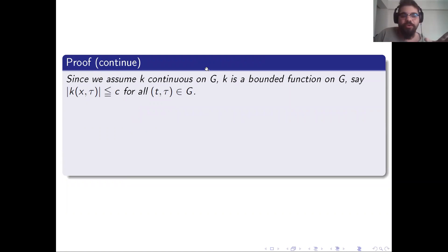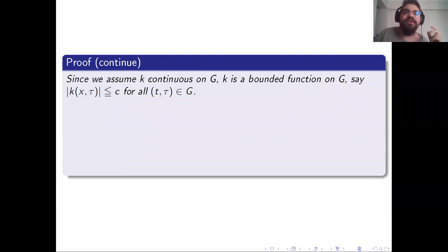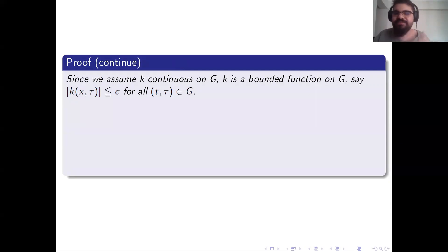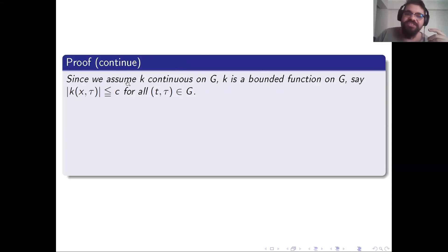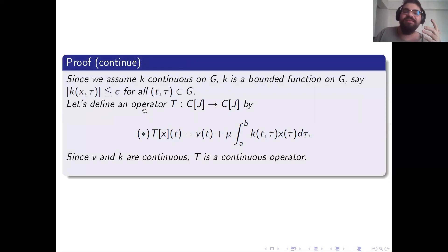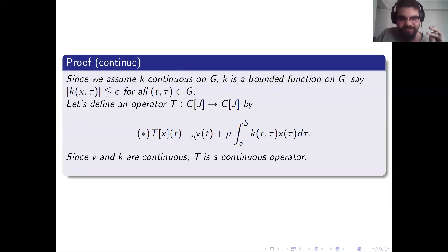As m goes to infinity, the metric d(x, x_m) is less than epsilon. For any t in J this inequality holds, showing that x_m converges to x uniformly on J. Since all elements of this Cauchy sequence are continuous on J and the convergence is uniform, the limit function x is continuous on J. Since x is in the space of all continuous functions, x is in the metric space, hence C(J) is a complete metric space.